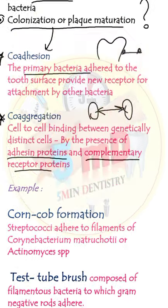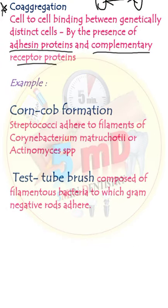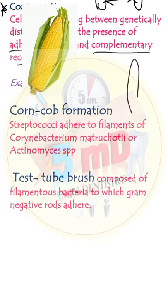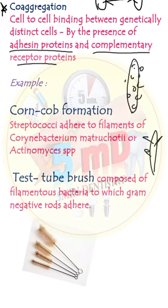Examples of co-aggregation include the corn-cob formation, in which streptococci adhere to the filaments of Corynebacterium or Actinomyces, and the test-tube brush formation, composed of filamentous bacteria to which gram-negative rods adhere.